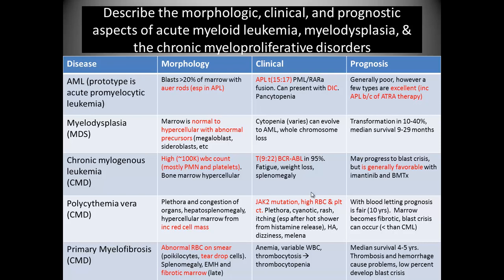For APL, acute promyelocytic leukemia, the big translocation is t(15;17). Interestingly, these patients can actually present with DIC. This is very important to realize — they can come in not knowing they had this disease, presenting in DIC and very sick, and sometimes that's how they die. If you treat the DIC, then you've got to deal with the APL. Back in the day it had a very poor prognosis, but now it's pretty good because of ATRA. The other variants of AML involving red cells, platelets, and other myeloid cells at various stages of differentiation still have pretty bad prognosis, but APL actually has a pretty good one.